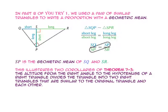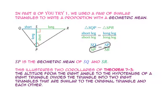In part B of you try 1, we used a pair of similar triangles to write a proportion with the geometric mean. We used the small triangle and the medium triangle to write the proportion: the length of segment SQ to the length of segment SP is equal to the length of segment SP to the length of segment SR. Notice that the length of segment SP are the means in this proportion, so the length of segment SP is the geometric mean of the length of segment SQ and the length of segment SR.